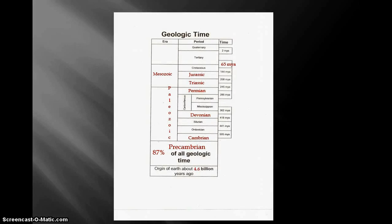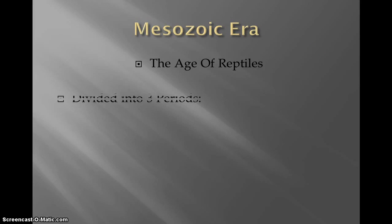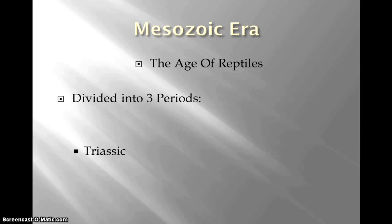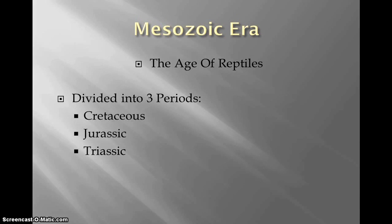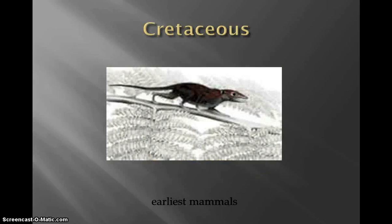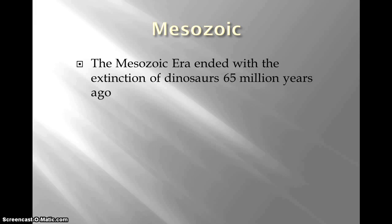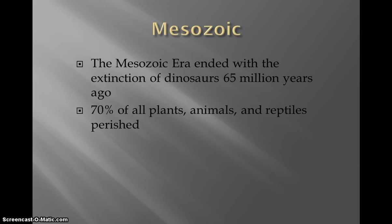Then we're on to the Mesozoic, which is the Triassic, Jurassic, and Cretaceous. It's the age of reptiles, divided into three periods: Triassic, Jurassic, and Cretaceous. The Triassic had the earliest dinosaurs and the first birds. The Cretaceous had the earliest mammals. The Mesozoic era ended with the extinction of the dinosaurs about 65 million years ago, when 70–75% of plants and animals perished.